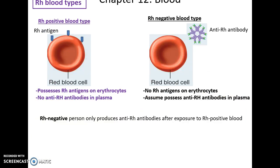Again, the Rh blood types: if you're positive, you have the Rh antigen, and if you're negative, you lack the antigen and therefore have antibodies against Rh. So the plus and minus can also be relevant when you're doing blood transfusions.